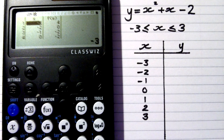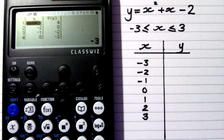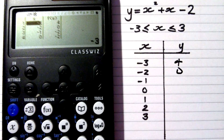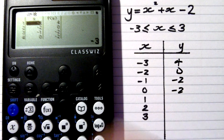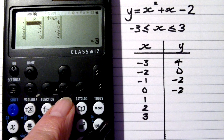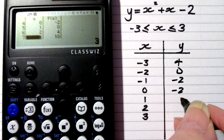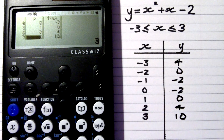And there's my table already. For negative three it gives me an f of x — remember, that just means y — value of four. For negative two it gives me zero, then negative two, negative two again. Let's navigate down. Then it gives me zero, four, and ten.